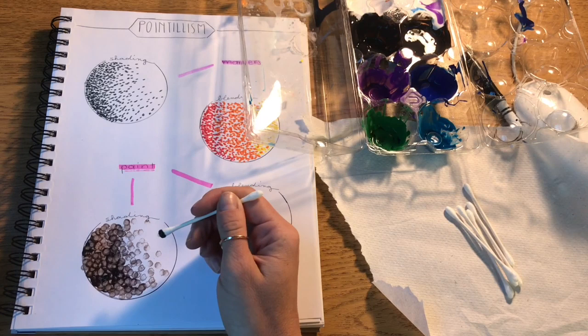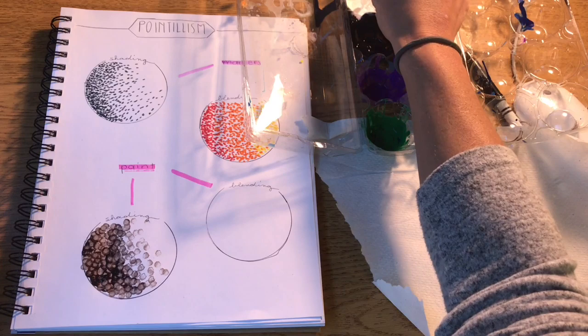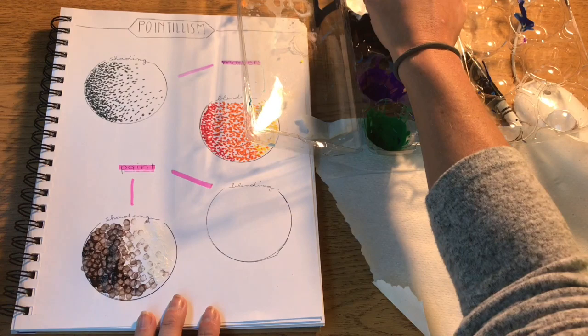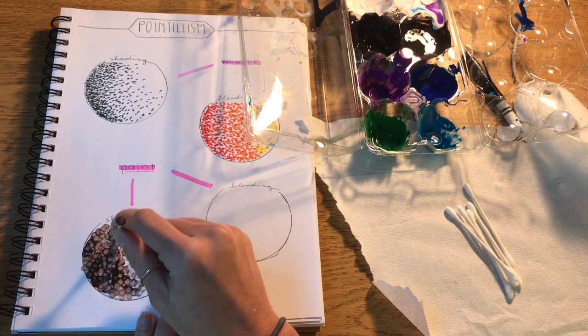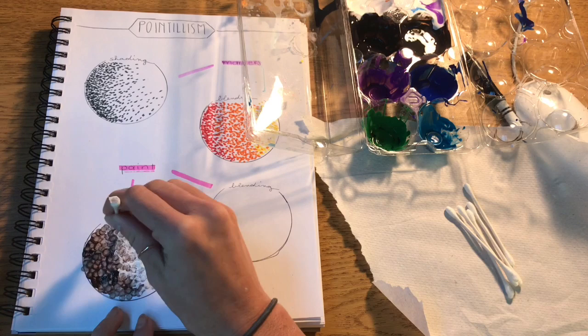And then the cool thing with paint is if you paint one color on top of another color they kind of mix together. So I'm gonna flip my q-tip around, put some white on this end, and I'll let them mix together in my circle. Now I can keep flipping my q-tip back and forth so I can get that nice faded transition.